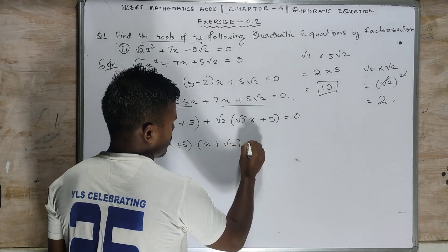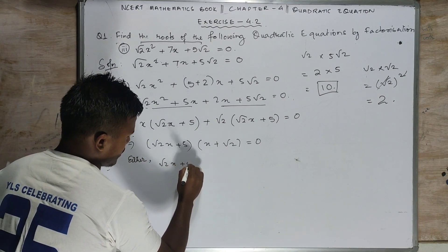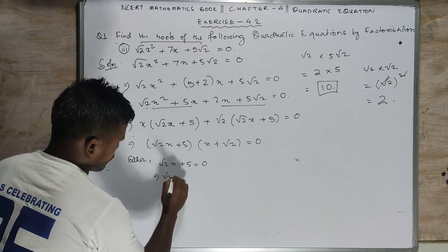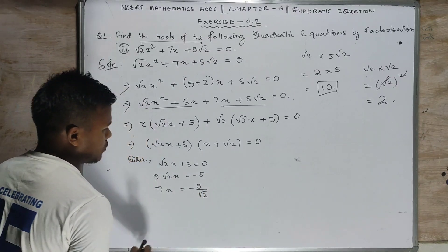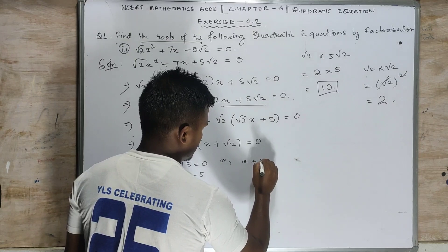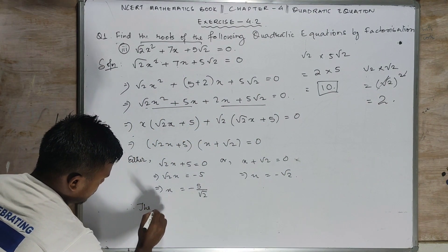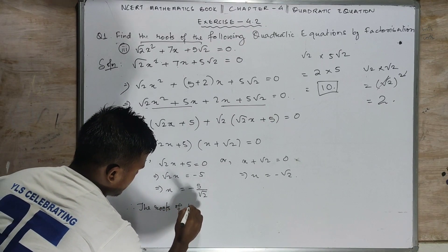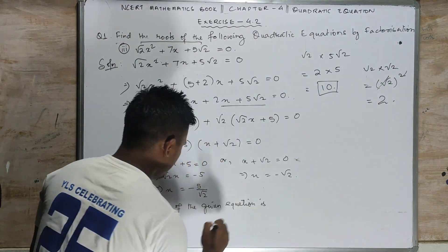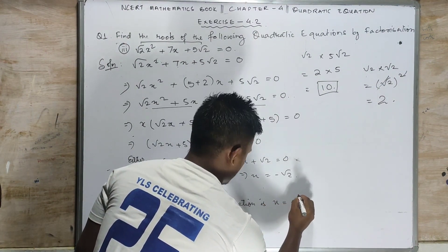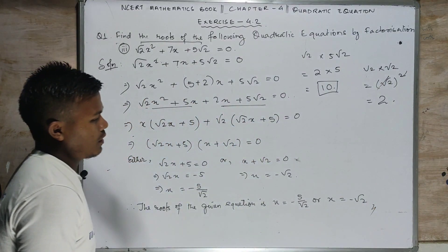From the two common factors we get (root 2 x plus 5)(x plus root 2) equals 0. Either root 2 x plus 5 equals 0, so x equals minus 5 divided by root 2; or x plus root 2 equals 0, so x equals minus root 2. Therefore the roots of the given equation are x equals minus 5 over root 2 or x equals minus root 2.